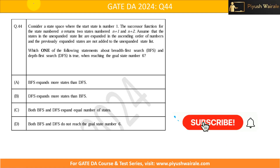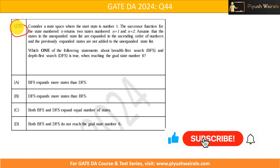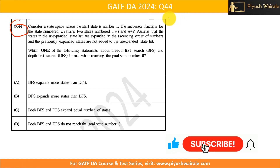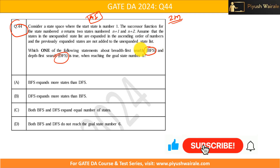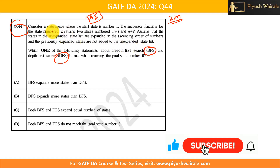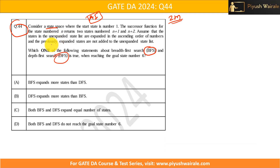Hello everyone. In this video we are going to discuss question number 44 of the GATE DA24 exam. This question was asked for two marks and is based on the AI course. We already discussed BFS and DFS in the PDSA course and in the AI course, but this question is from the AI course because here we are dealing with the state space.